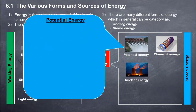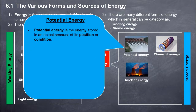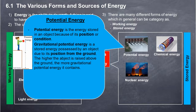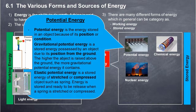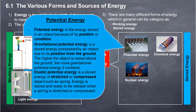Potential Energy: Potential energy is the energy stored in an object because of its position or condition. Gravitational potential energy is stored energy possessed by an object due to its position from the ground. The higher the object is raised above the ground, the more gravitational potential energy it contains. Elastic potential energy is the stored energy of a stretched or compressed object, such as a spring. Energy is stored and ready to be released when a spring is stretched or compressed.